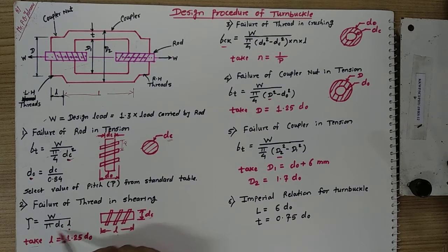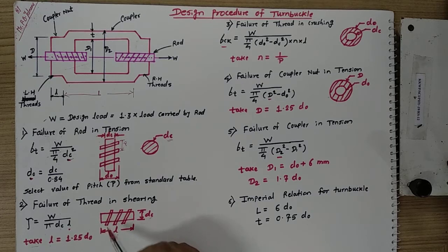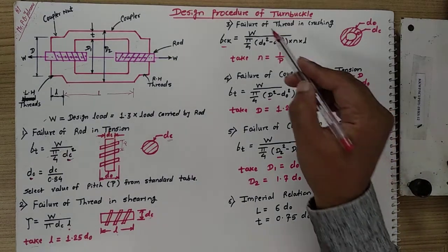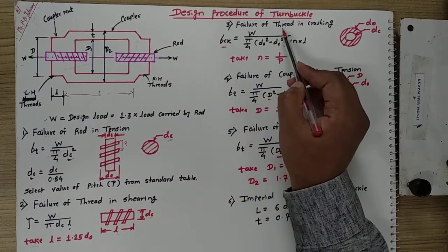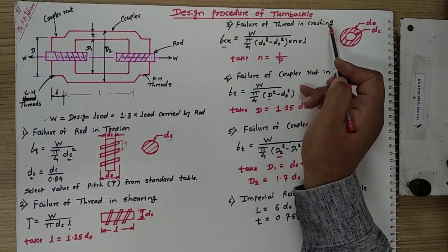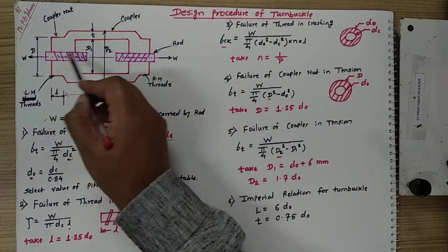For example, if the calculated l is 10 and the empirical relation gives l as 12, then we select the maximum value, which is 12. The third step is failure of thread in crushing.